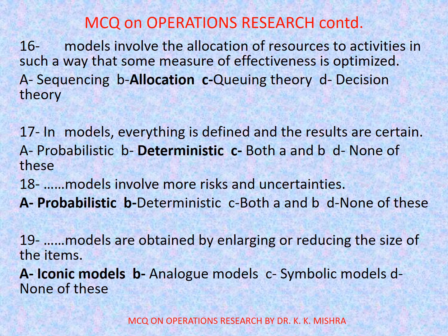Question number 17: In dash models, everything is defined and the results are certain — options are: A. Probabilistic, B. Deterministic, C. Both A and B, D. None of these. Correct option is B: Deterministic. Question number 18: Dash models involve more risks and uncertainties — options are: A. Probabilistic, B. Deterministic, C. Both A and B, D. None of these. Correct option is A: Probabilistic.